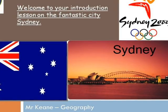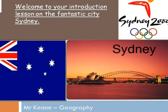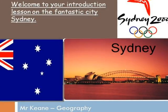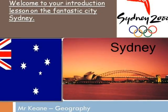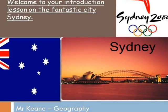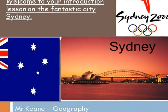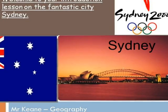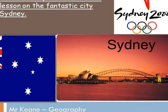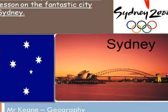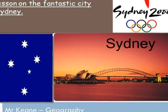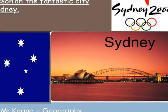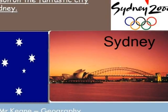Sydney is the largest and most populous city in Australia and the state capital, or province as we know in Ireland, of New South Wales. Sydney is located on Australia's southeast coast of the Tasman Sea. Do you know what inhabitants of Sydney are called? Inhabitants of Sydney are called Sydneysiders, comprising a cosmopolitan and international population of people from numerous places around the world.